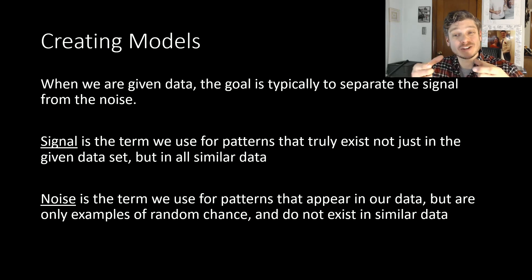So again, we have our small sample. We're hoping to find a pattern in that sample that can be applied to the population as a whole. The problem that we can run into is that with the signal comes the noise. And noise is the term we use for patterns that appear in our data set, but are only examples of random chance and don't actually exist in similar data. So it exists in our small sample, but doesn't exist in the population as a whole. And so that can definitely be an issue if we say, hey, I found a pattern, but if it's noise, then it's not really a true pattern.